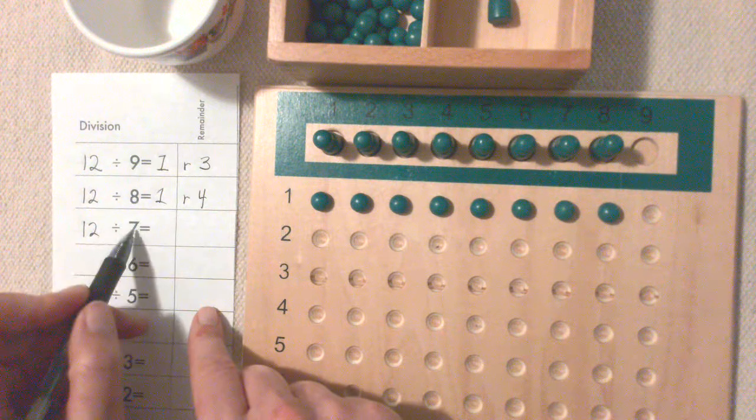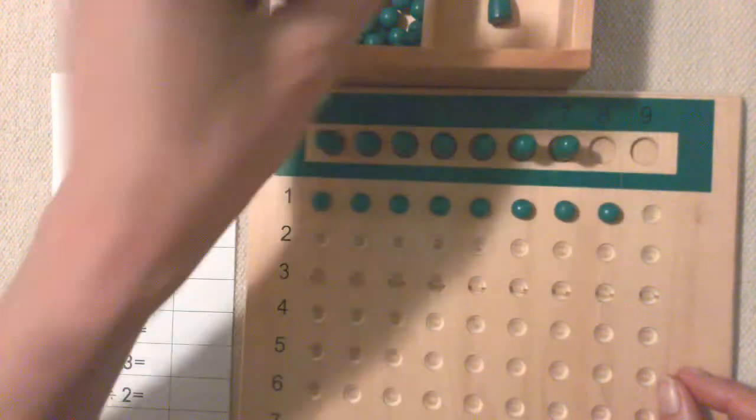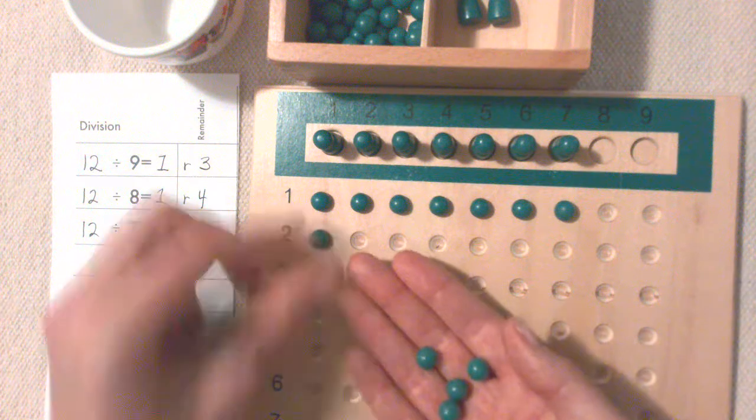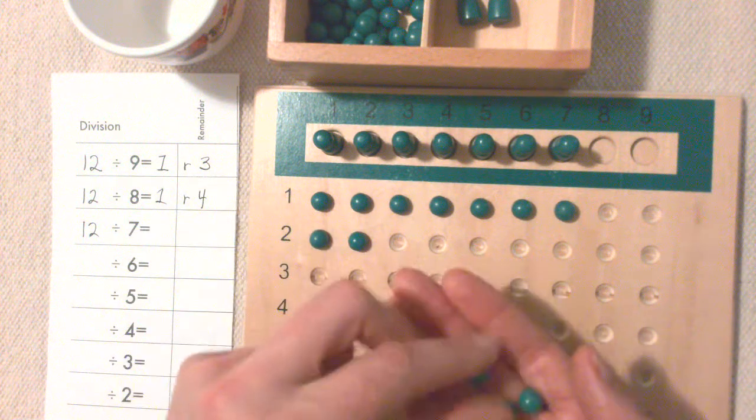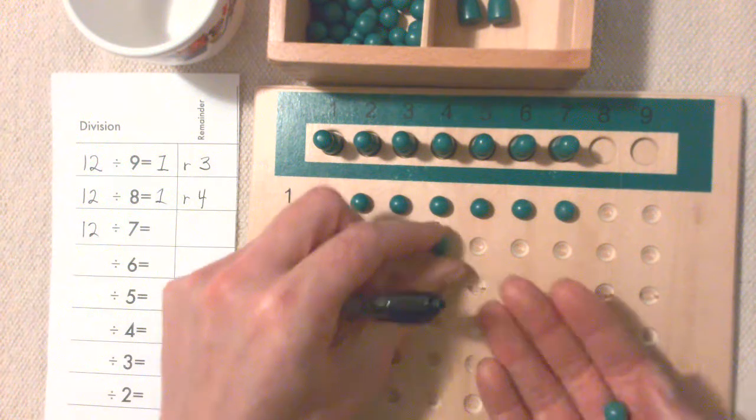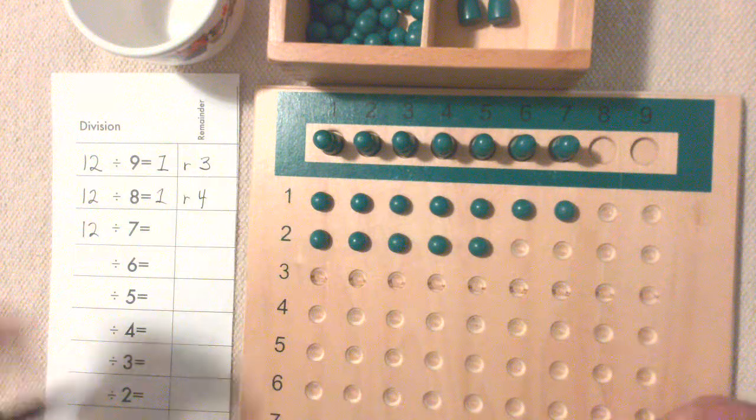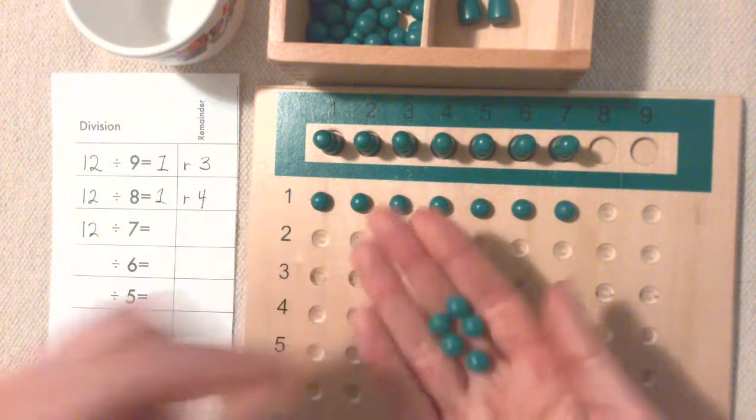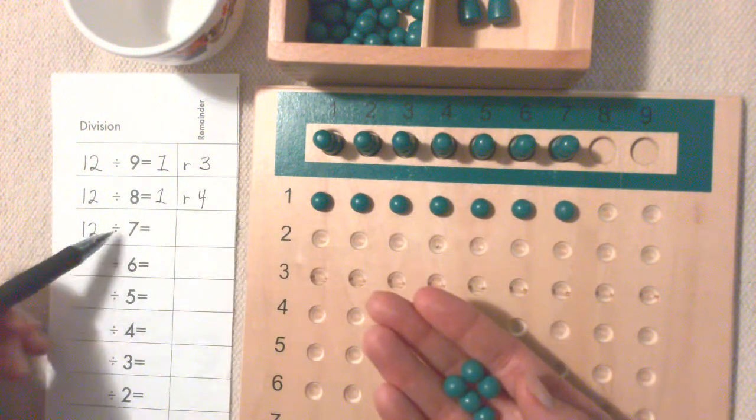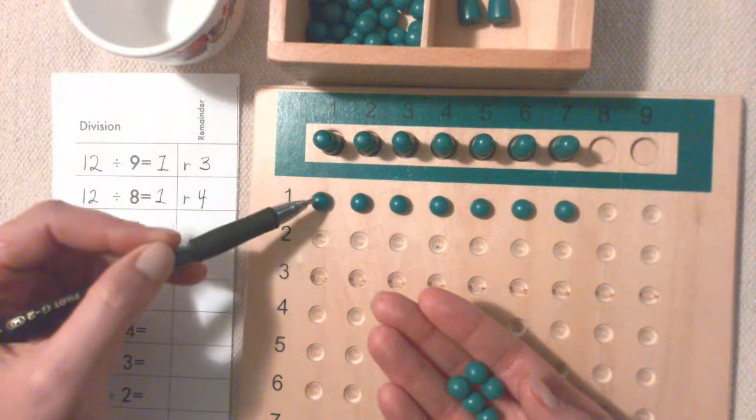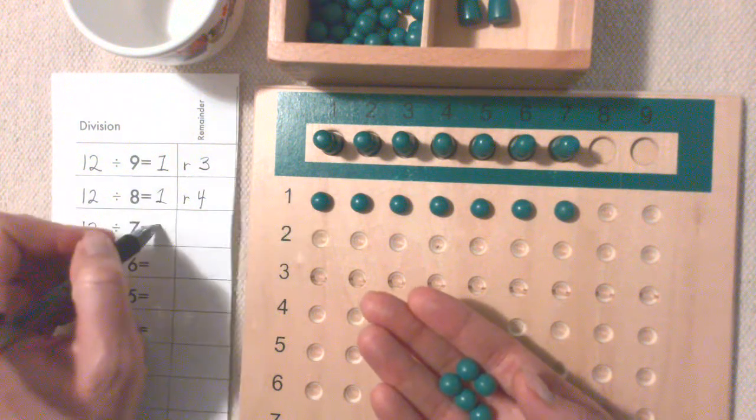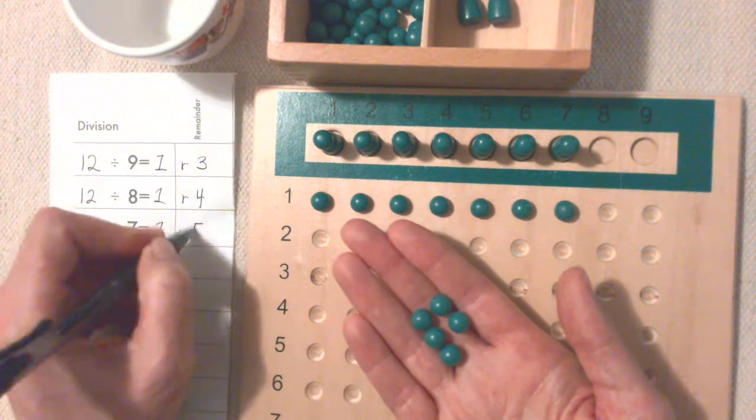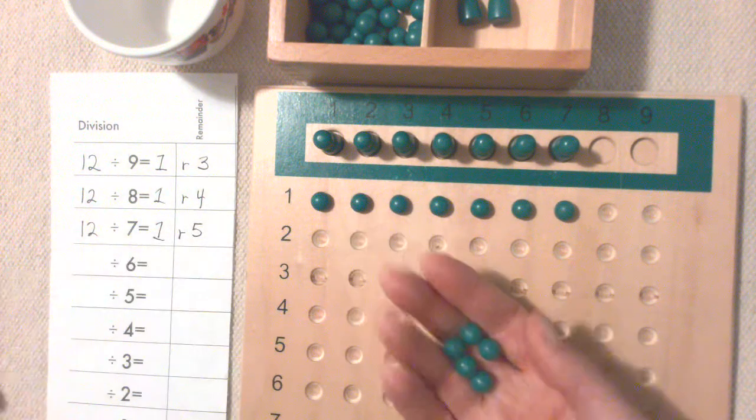12 divided by 7. And then we'll take away a Skittle and see if we have enough. No, we don't have enough to give each Skittle one more bead. So 12 divided by 7 equals, each one gets one. And there's one, two, three, four, five left over. One remainder five.